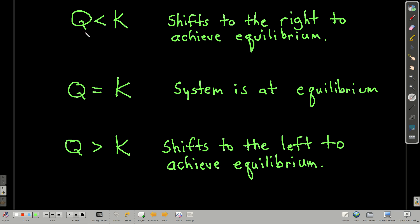If when you plug in the values for Q, you get the number, if it's less than K, what that tells you is that the equilibrium is going to shift to the right. The system is going to shift to the right to achieve equilibrium.